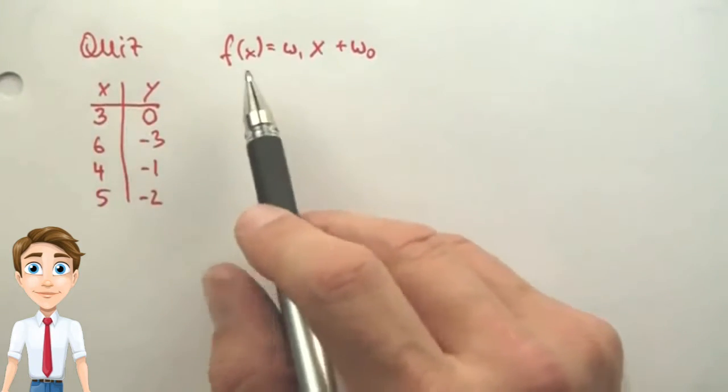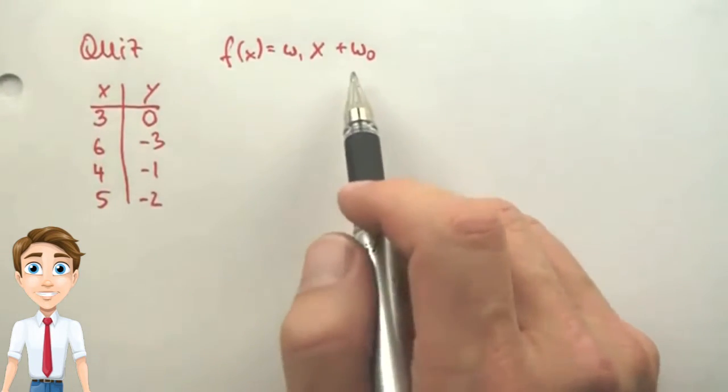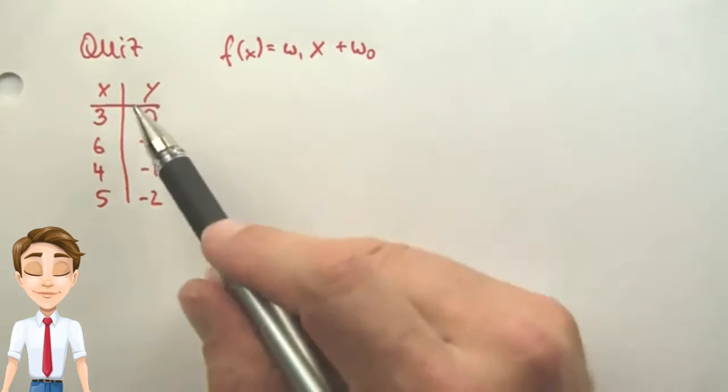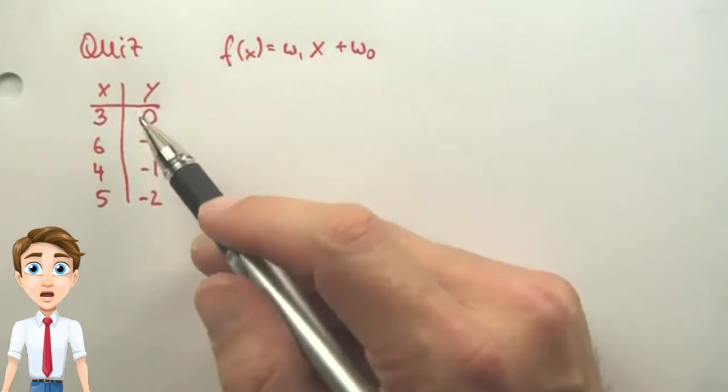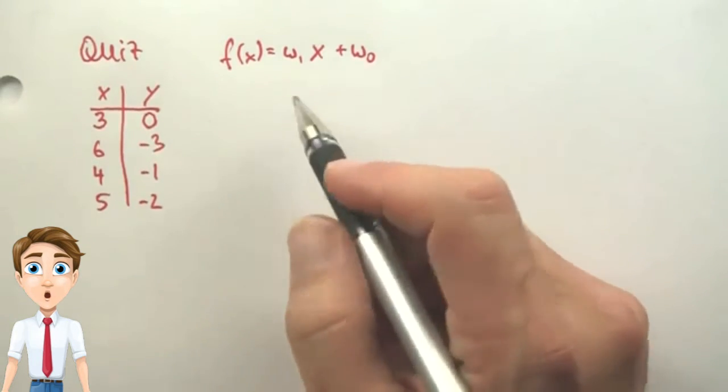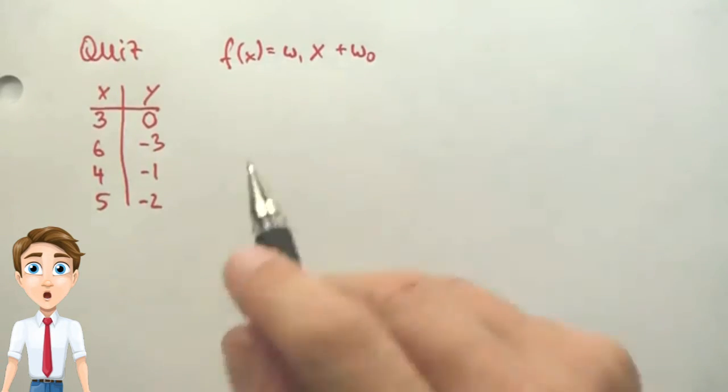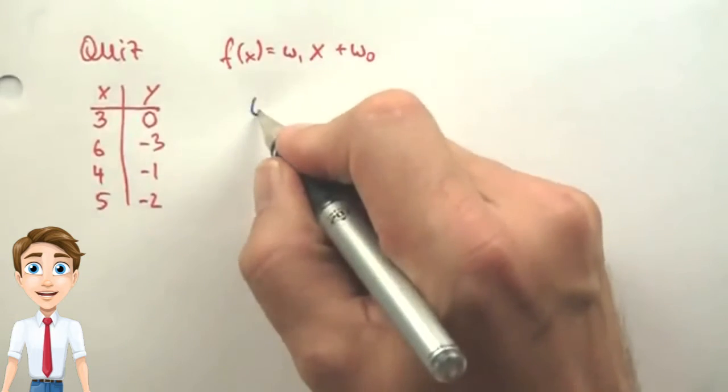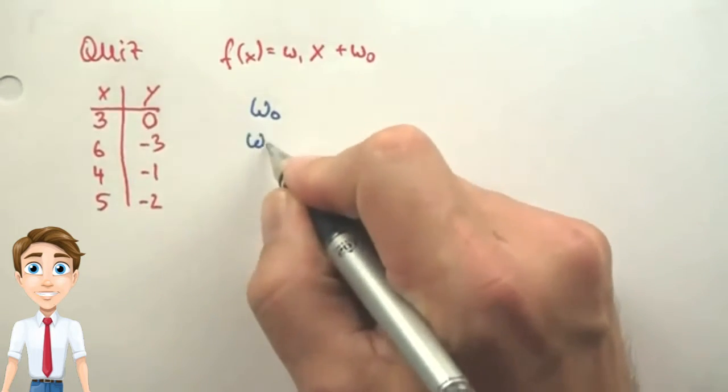In this quiz, I'm giving you the linear regression form with two unknown parameters, w1 and w0. I'm giving you a data set, and this data set happens to be fitable by a linear regression model without any residual error. Without any math, can you look at this and find out what the two parameters, w0 and w1, are?